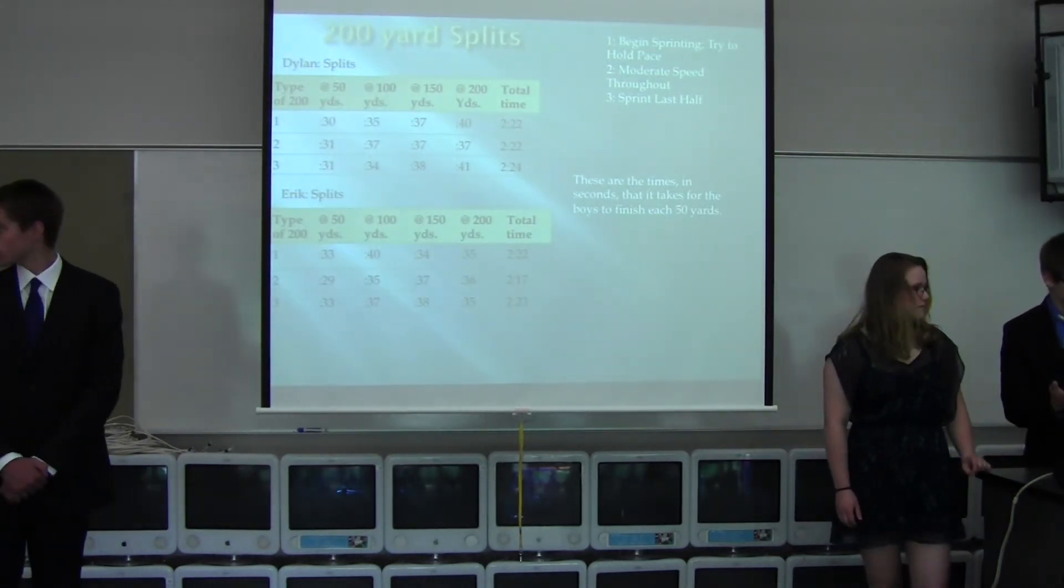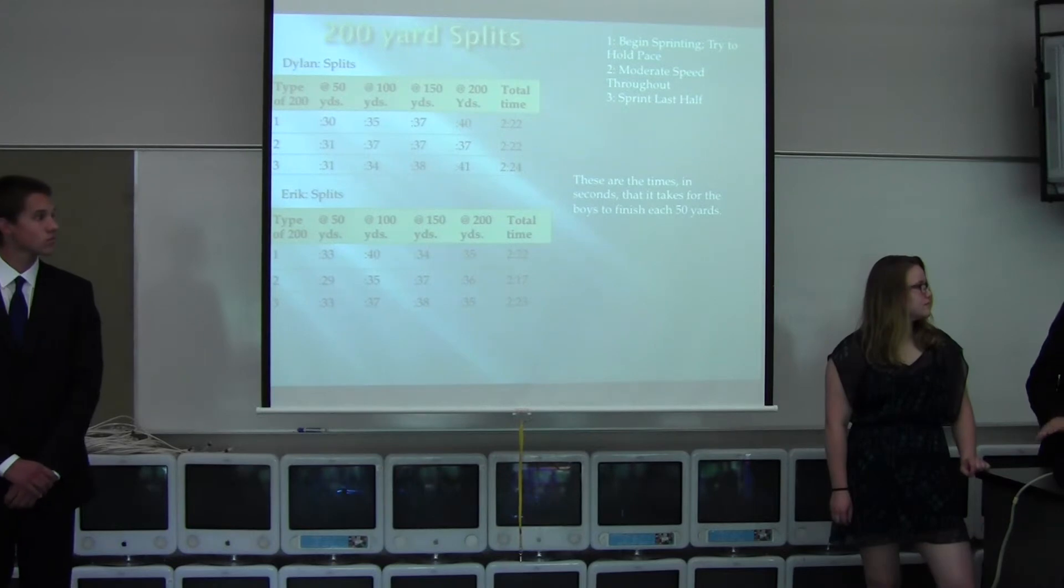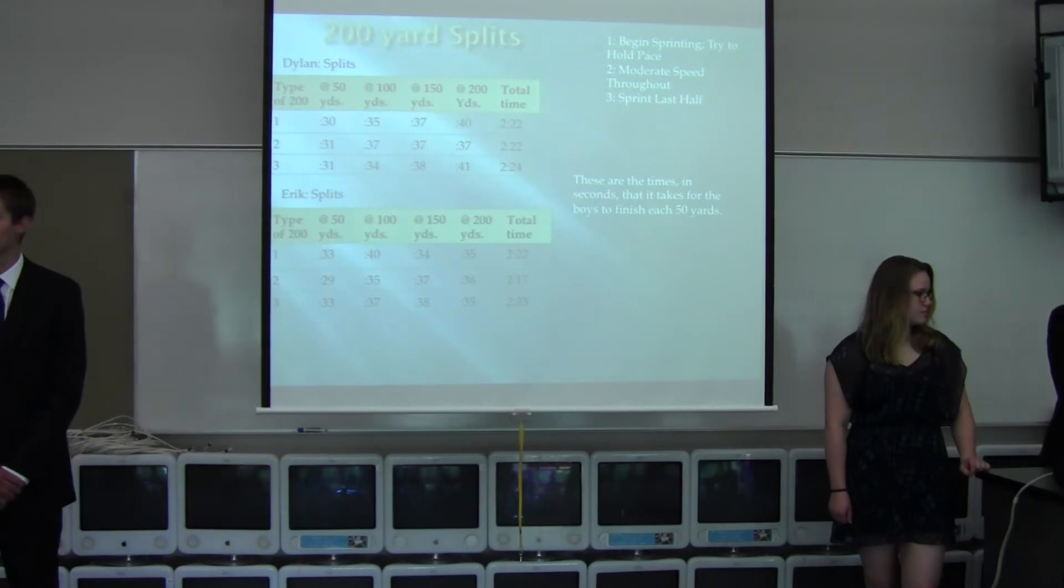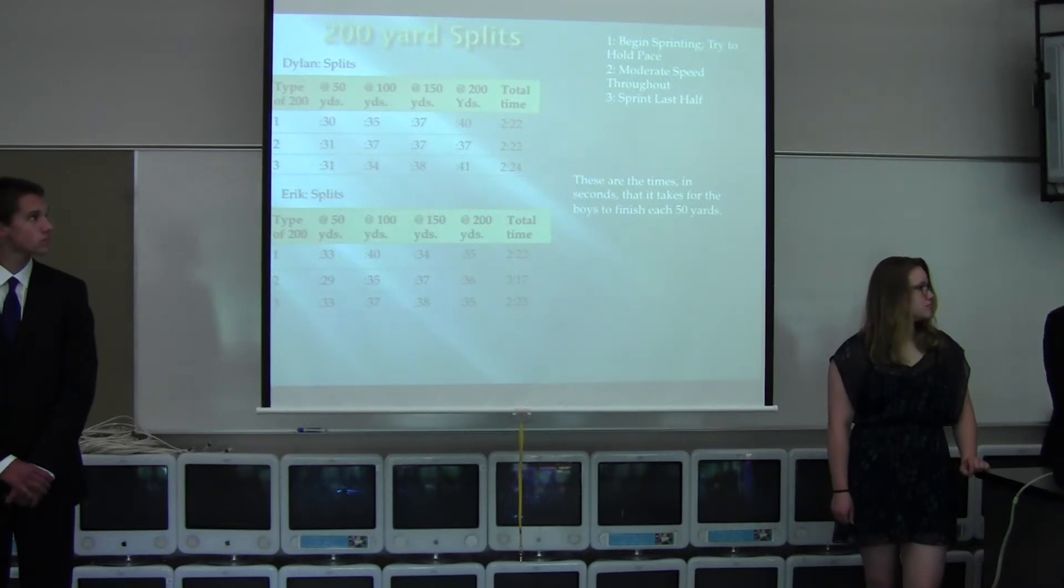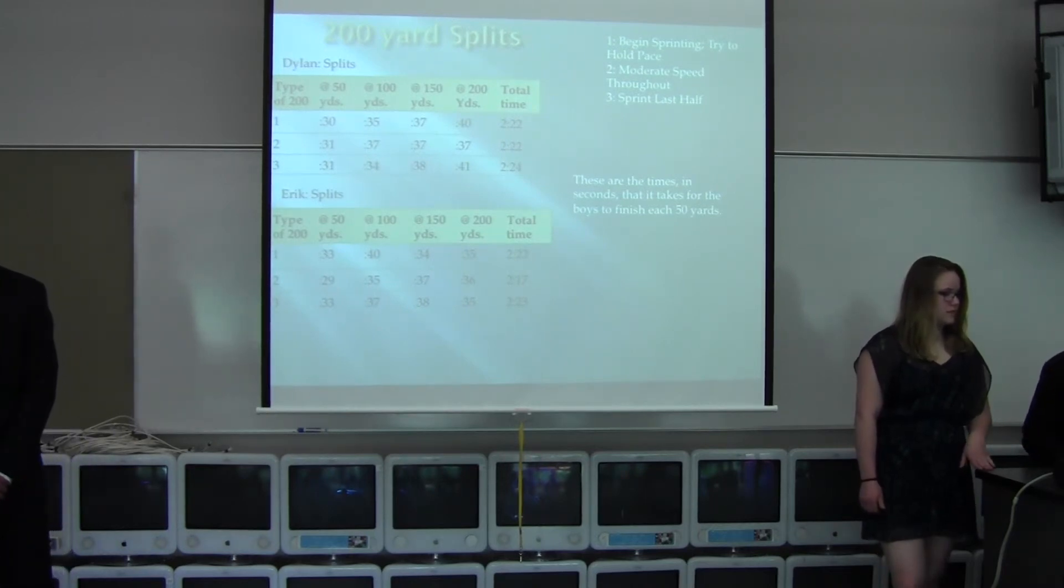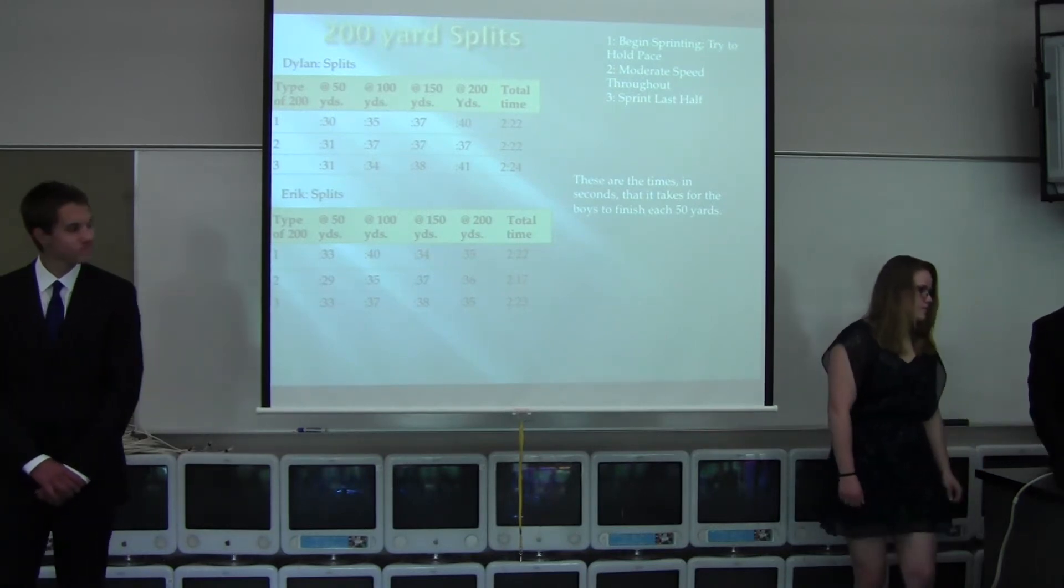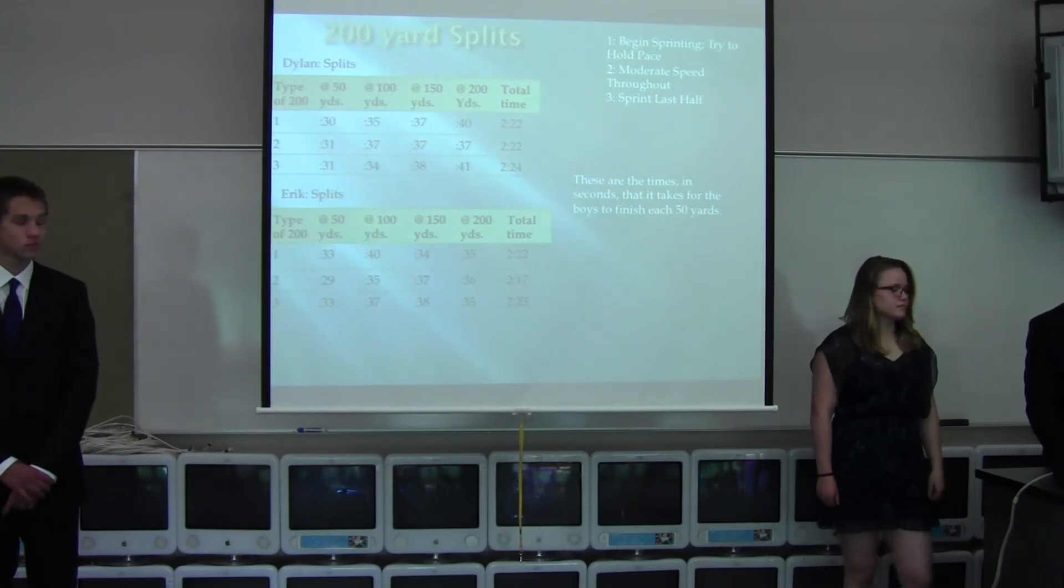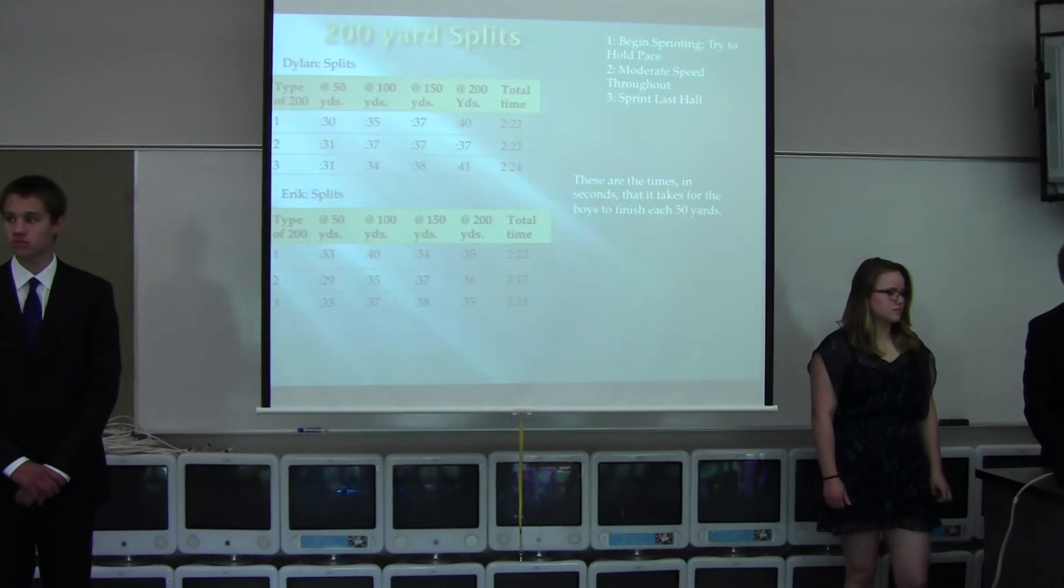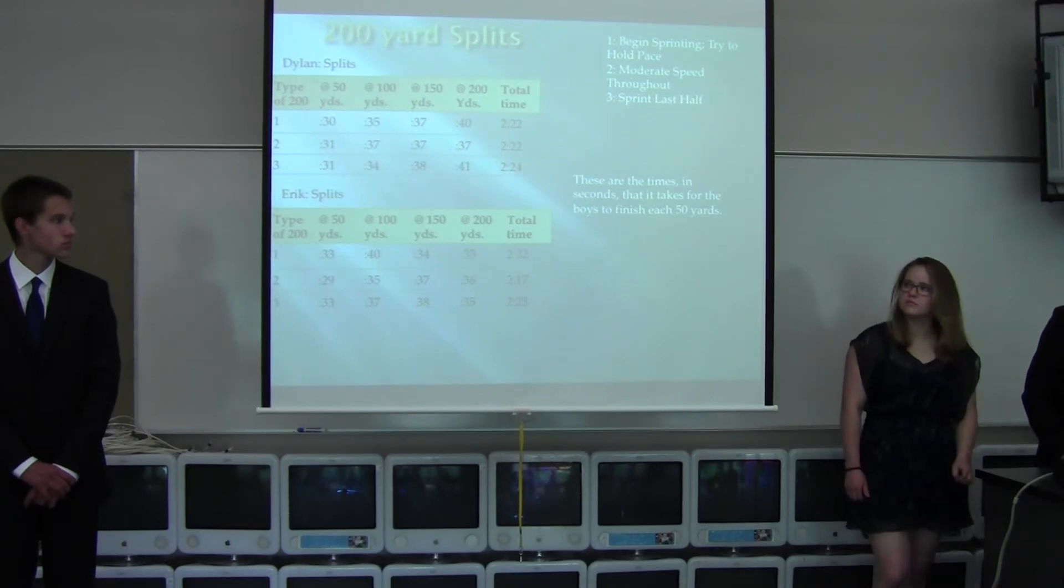This is the 200 yards - the swims we had them do, their splits, final times, and the different ways we had them swim. If you look at Dylan's splits, his total times are about the same, but his splits are very different because we had him swim different styles - sprinting the last half, keeping a pace, or sprinting in the beginning. You can sort of see by the times what was going on, but it's hard to tell. So we decided to put it into velocities to see the different velocities at different times.